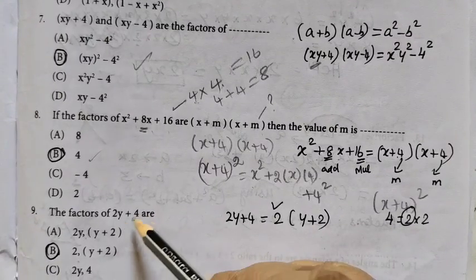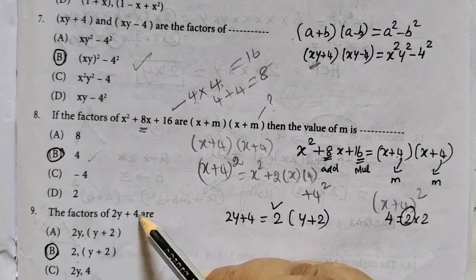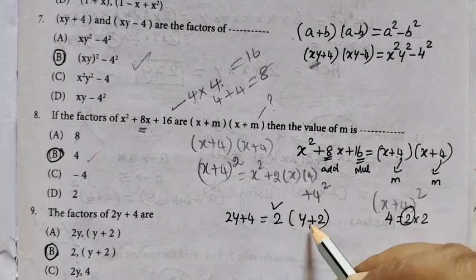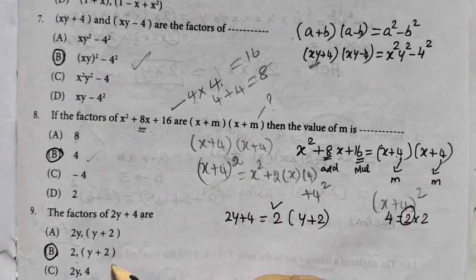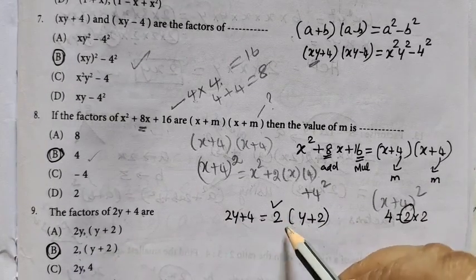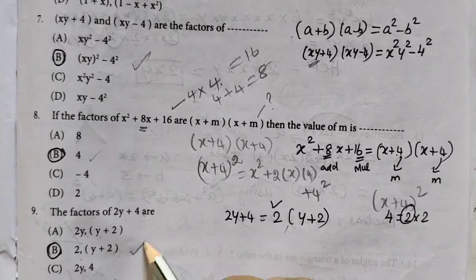Question 9: The factors of 2y plus 4 are... If we take 2 common, we get 2(y + 2). So 2 is one factor and y plus 2 is one factor.